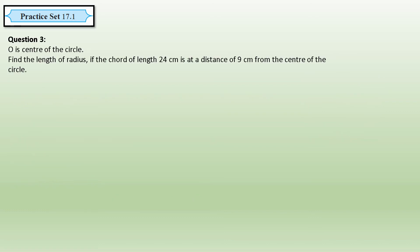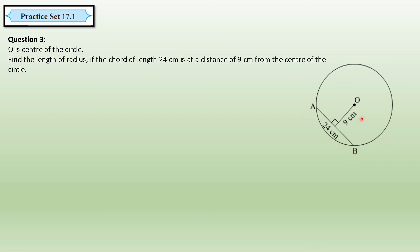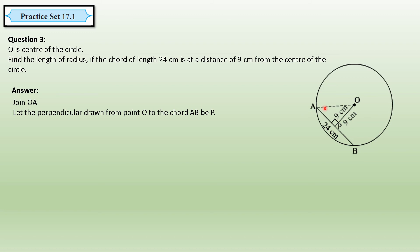Question 3: O is the center of the circle. Find the length of the radius if the chord of length 24 centimeters is at a distance of 9 centimeters from the center. In the figure, AB is 24 centimeters and the distance from the center to the chord is 9 centimeters. We join OA, which will be the radius we need to find. Let P be the foot of the perpendicular from O to chord AB.